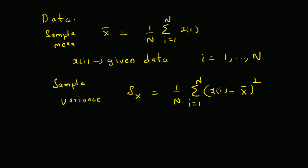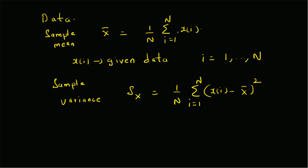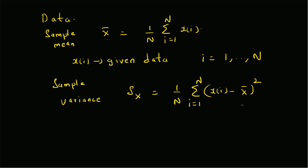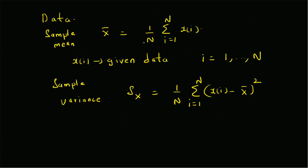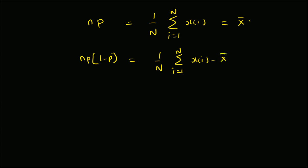The method of moments tells us to equate theory to data to solve for the unknown parameters. From theory, the mean n*p becomes equal to the sample mean x-bar, and the variance n*p*(1-p) becomes equal to the sample variance (1/n) * summation of (x_i - x-bar)^2.